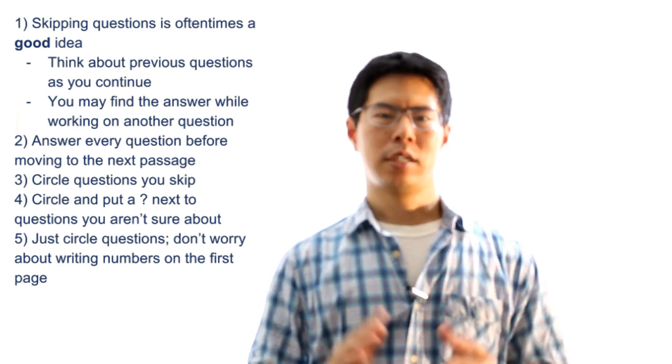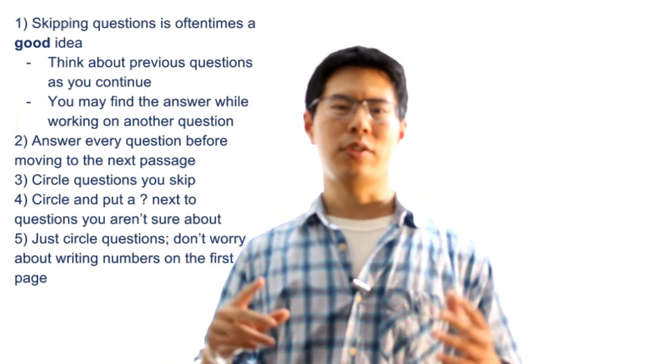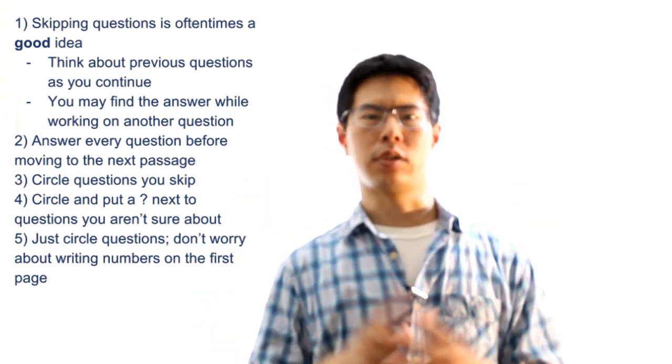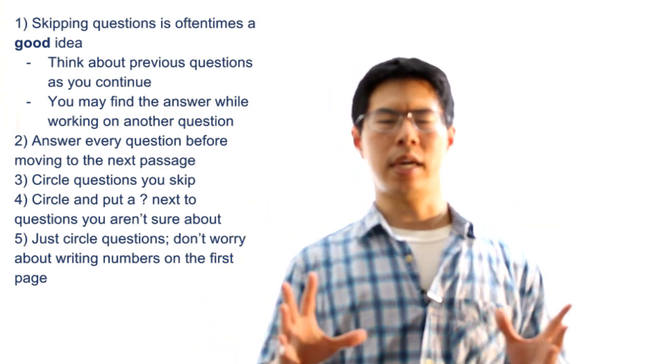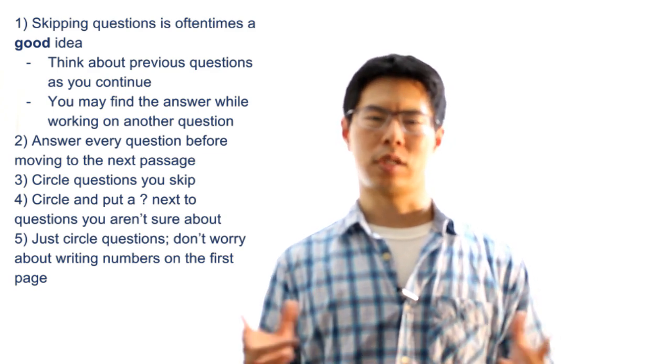Third, if you skip a question, circle the number in your test booklet. Fourth, for questions that you answer but aren't entirely sure about your answer, circle the number of the question and write a question mark next to it to easily distinguish these questions from ones that you skip.